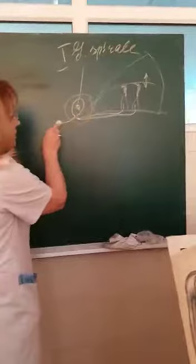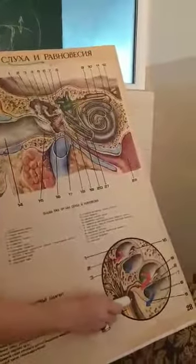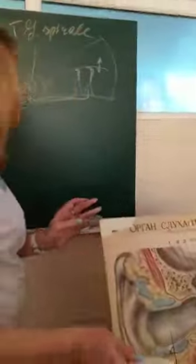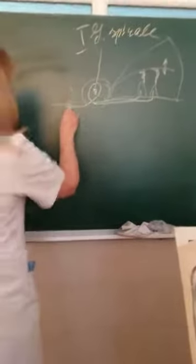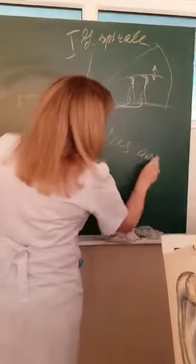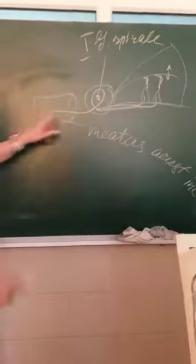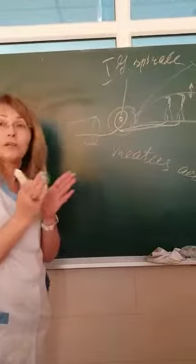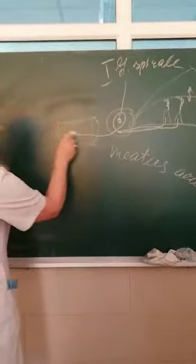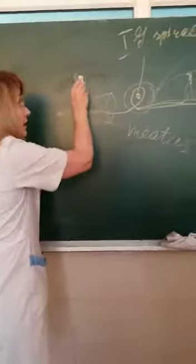Axons of this neuron run through the canalis longitudinalis of the modiolus and exit from the cochlea to the meatus acousticus internus. Here, these fibers run together with the vestibular portion, forming the nervus vestibulocochlearis, or the eighth cranial nerve.